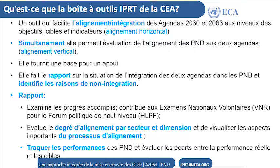L'IPART aide à la production des rapports. En aidant à examiner les progrès accomplis, l'IPART contribue aux examens nationaux volontaires pour le forum politique de renouveau. Elle permet également d'évaluer le degré d'alignement par secteur et dimension, de visualiser les aspects importants du processus d'alignement, de traquer les performances des PND et d'évaluer les écarts entre la performance réelle et les cibles.